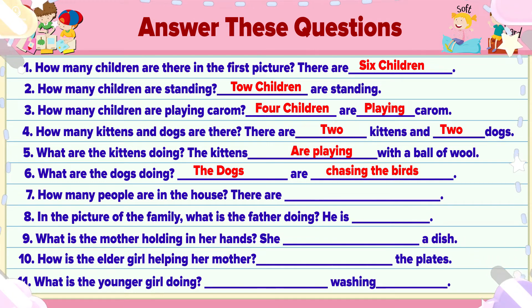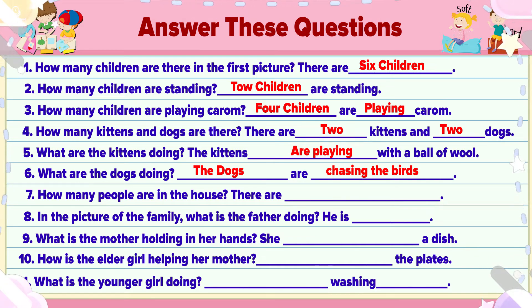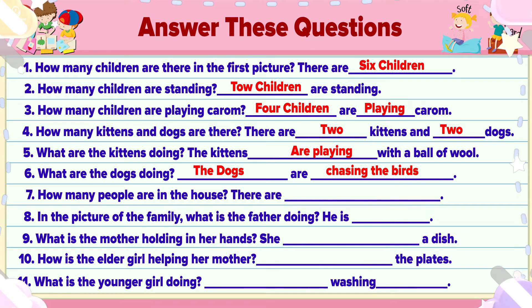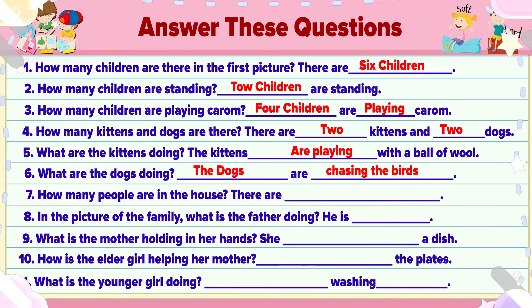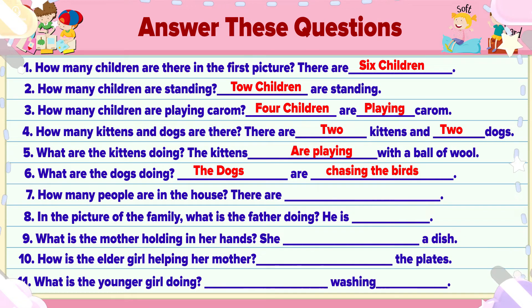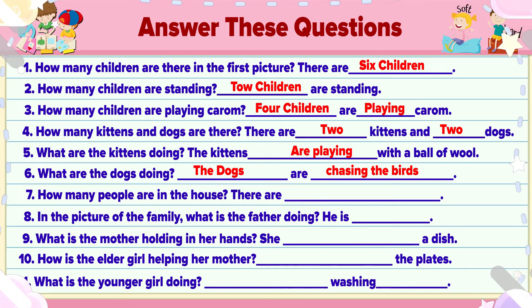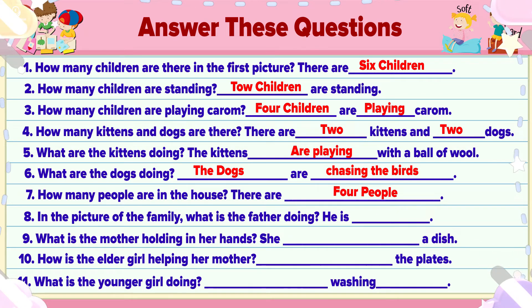Now we have point 7. How many people are there in the house? Counting: one, two, three, four. There are four people in the house.